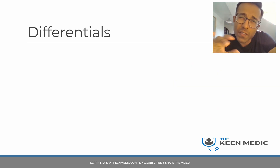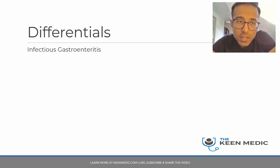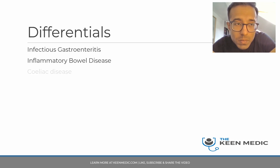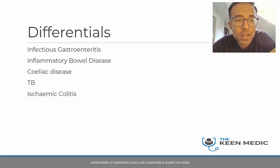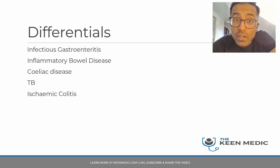So these are the differentials we should be thinking about. For a young man with bloody diarrhea, infectious gastroenteritis should be right at the top — we don't yet know if he's been travelling or eating at takeaways. Inflammatory bowel disease is another one — ulcerative colitis or Crohn's; we don't know which at this stage. Coeliac disease should always be considered in any patient with prolonged diarrhea. TB is possible — we need to know about contact history and travel to high-risk areas. Ischaemic colitis is less likely in this age group without risk factors like atrial fibrillation or heart disease, though he is a smoker. Malignancy is another consideration, though in this age group other than lymphoma it is less likely.